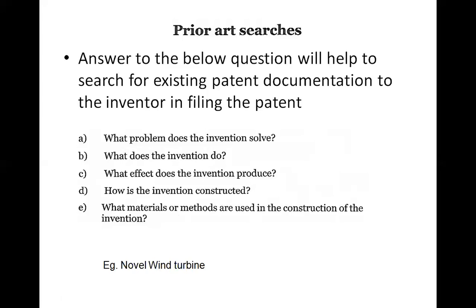For example, you can design a novel wind turbine, formulate a new one, or work with helicopter rotor blades. You can use any aerodynamic structure or existing patent as a reference when creating a new patent after conducting prior art research.